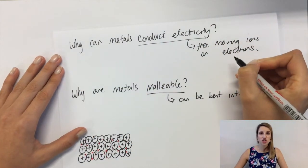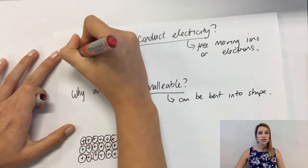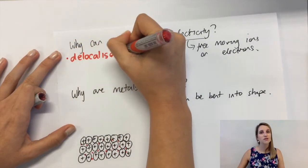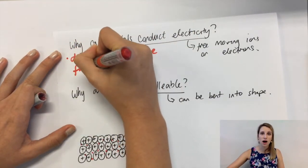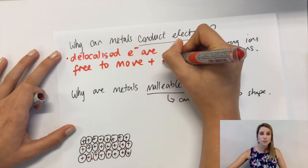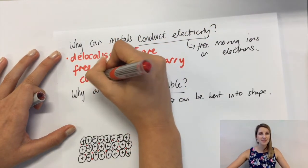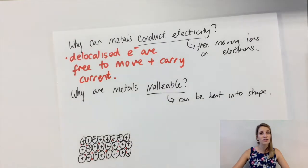In the case of the metallic structure that we just looked at, we showed the delocalized electrons being free to move. It's this part that causes metals to be able to conduct electricity, because those electrons can carry the current.